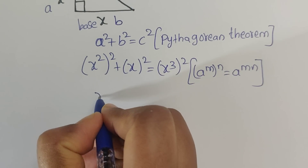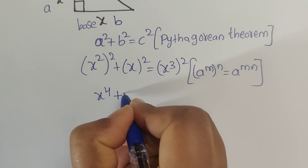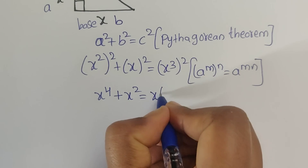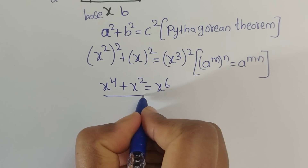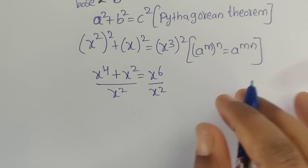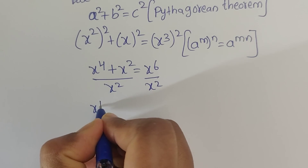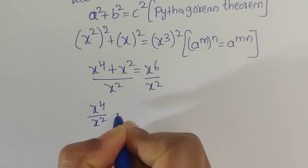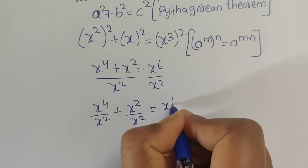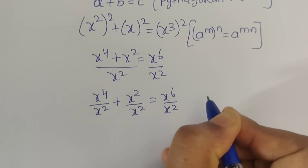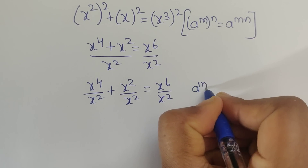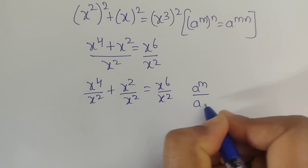Now, x to the power of 2, times 2 — here we apply the formula: a to the power of m, whole to the power of n, equals a to the power of m times n. Using this formula, we can write x to the power of 4 plus x squared equals x to the power of 3 times 2, which equals x to the power of 6. Now divide by x squared on both sides. We get x to the power of 4 divided by x squared, plus x squared divided by x squared, equals x to the power of 6 divided by x squared. Here we apply the formula a to the power of m divided by a to the power of n.